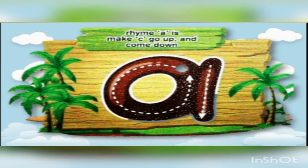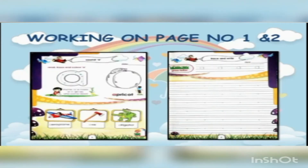This is slide number 3. In this slide, when we rhyme A, we call it A. And when we trace it, we make a stroke go up and come down.